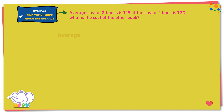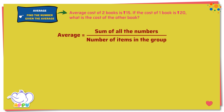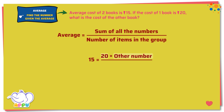We know that average equals sum of all the numbers divided by the number of items in the group. We know the average is 15. We also know that one of the numbers is 20 and the other number is unknown. The number of items in the group is 2.